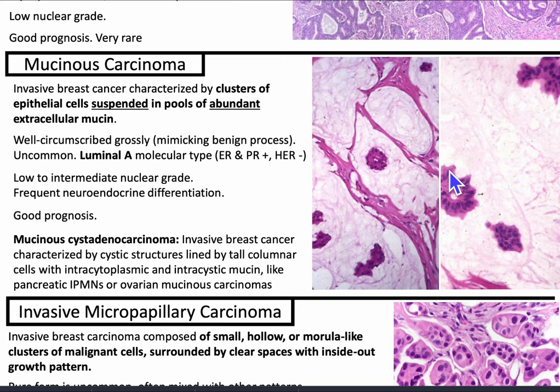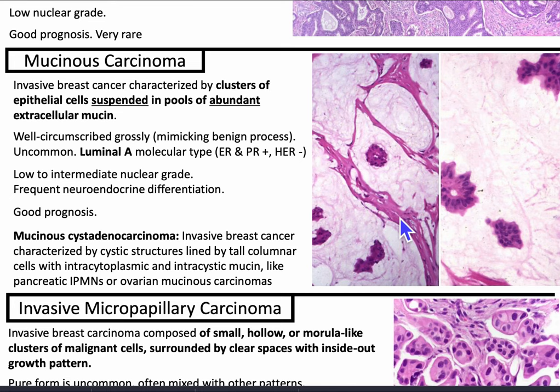Mucinous carcinoma is invasive breast cancer characterized by clusters of epithelial cells suspended in pools of abundant extracellular mucin. It's well-circumscribed grossly, so it can mimic a benign process, but it's uncommon and has luminal A molecular type — ER and PR positive, HER2 negative — with low to intermediate nuclear grade and frequent neuroendocrine differentiation. It has a good prognosis. Also, mucinous cystadenocarcinoma is invasive breast cancer characterized by cystic structures lined by tall columnar cells with intracytoplasmic and intracystic mucin, like pancreatic IPMNs or ovarian mucinous carcinomas.